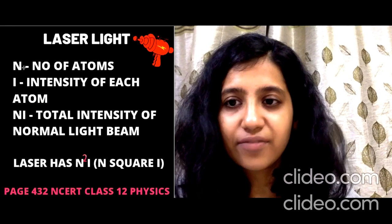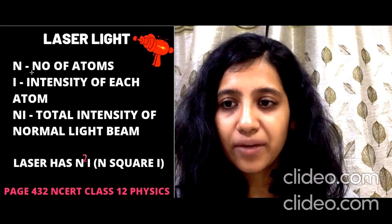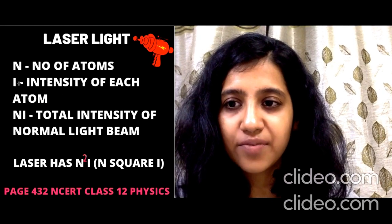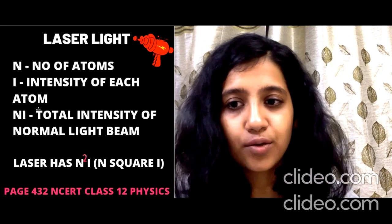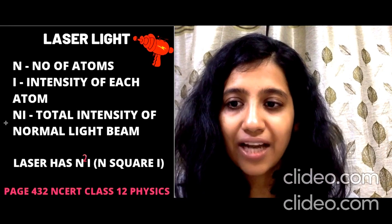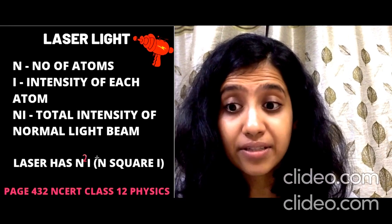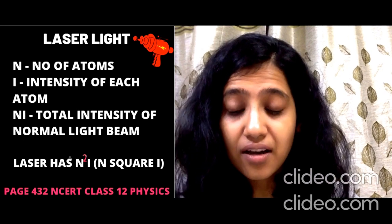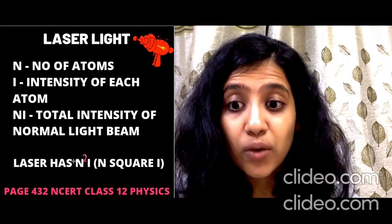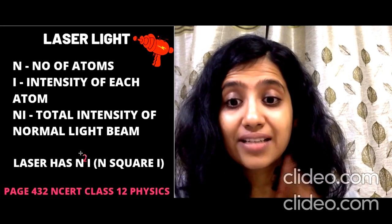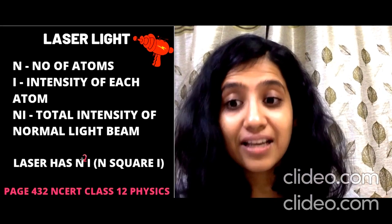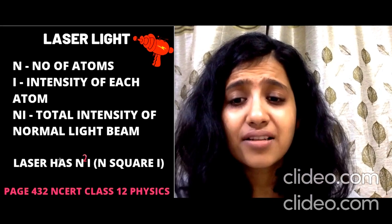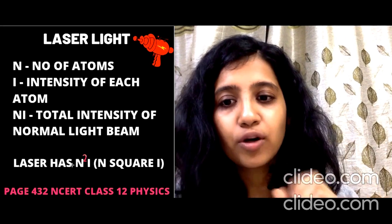Let's start a comparison between normal light and laser light. Generally, in normal light, if there are N number of atoms and each atom has intensity I, the total intensity will be N into I. But in laser, what happens is that it is N squared I — it is not N·I, it is N into N into I. This is the difference between laser and normal light, and that is why laser has a very high intensity compared to normal light.